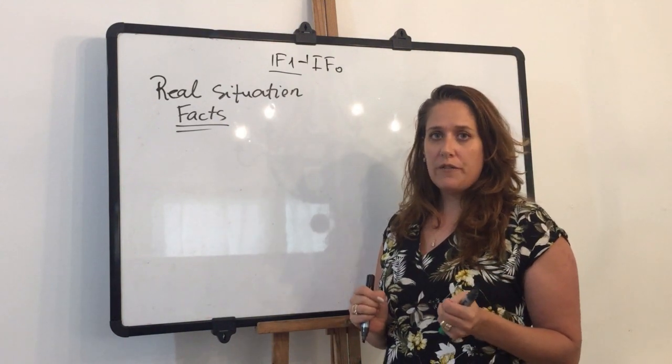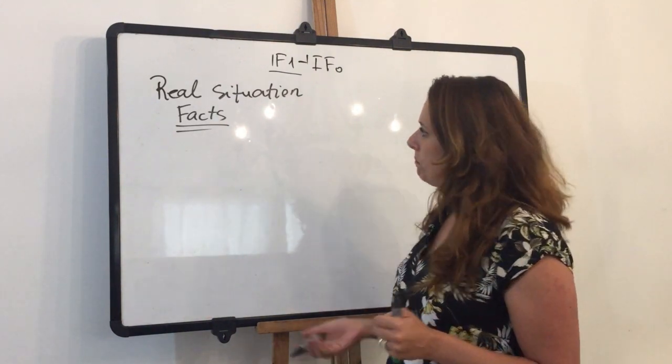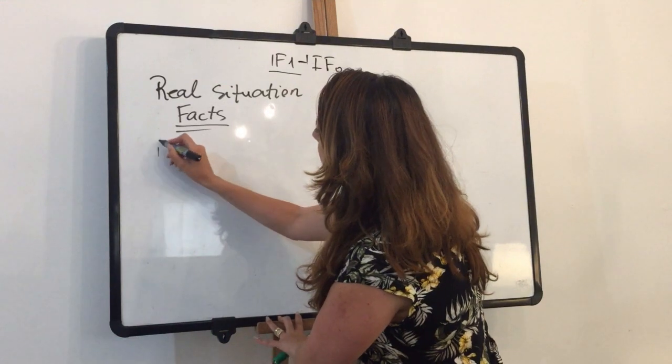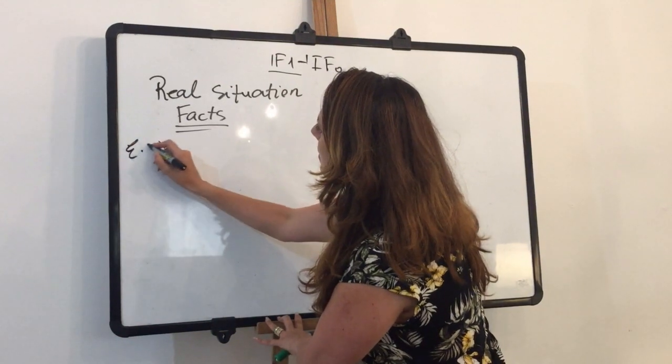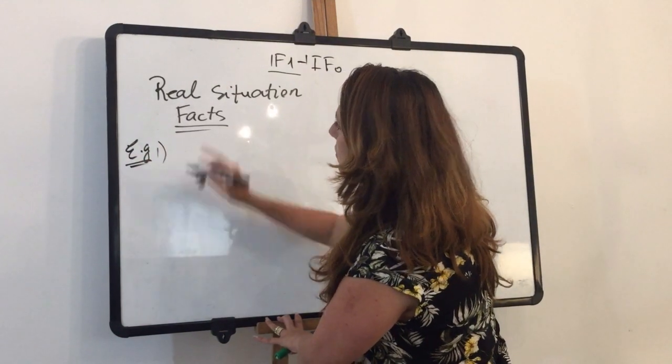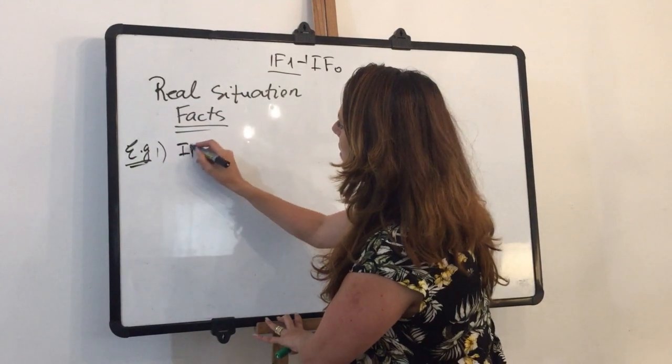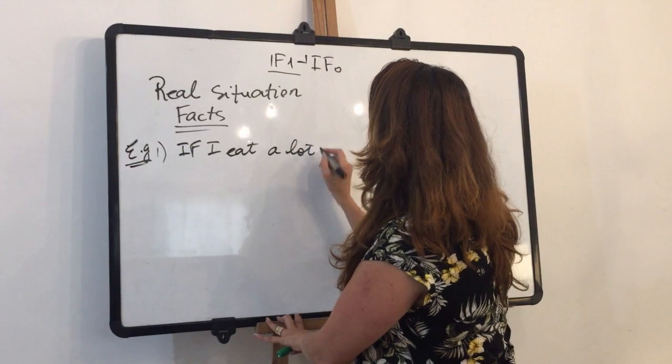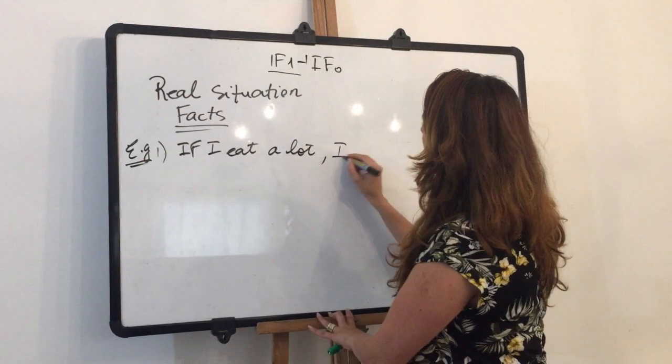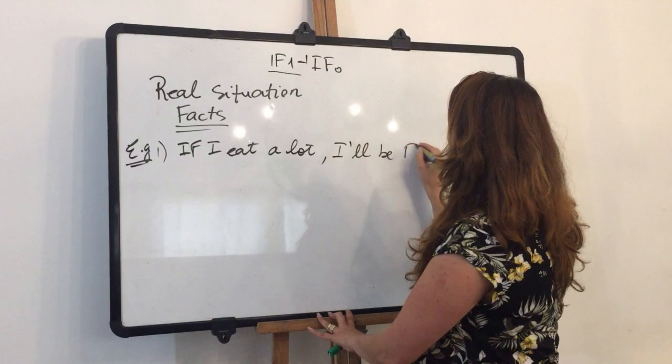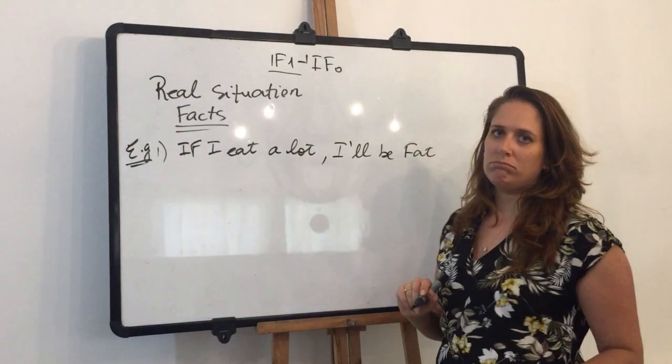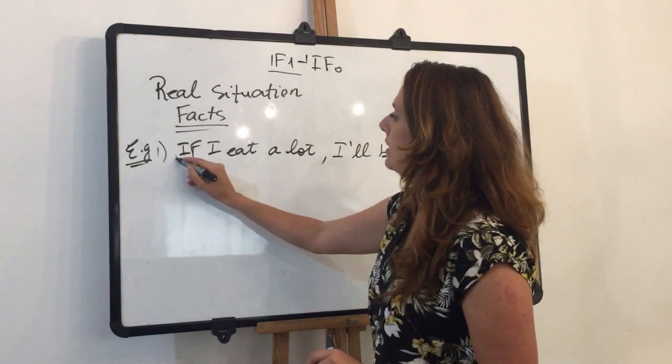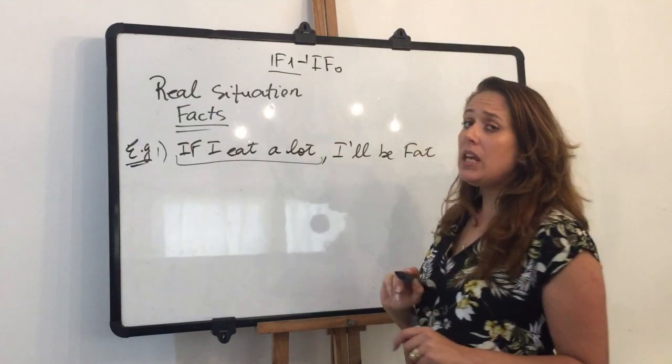The first example I have is a real situation: if I eat a lot, I'll be fat. This is the first part of the if, and this is the second part. Let's take a look at the structure.